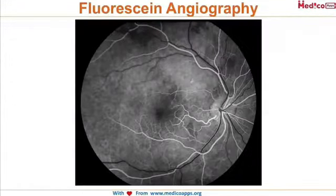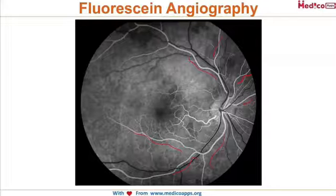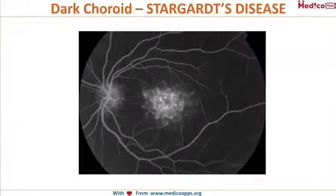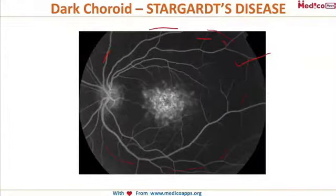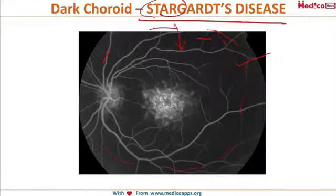On a normal fluorescein angiograph, you can see the dye passing through all vessels with no leakage anywhere. In contrast, Stargardt disease shows a dark choroid on fluorescein angiography — the choroid appears dark in color, so you can remember it as seeing stars in the darkness.